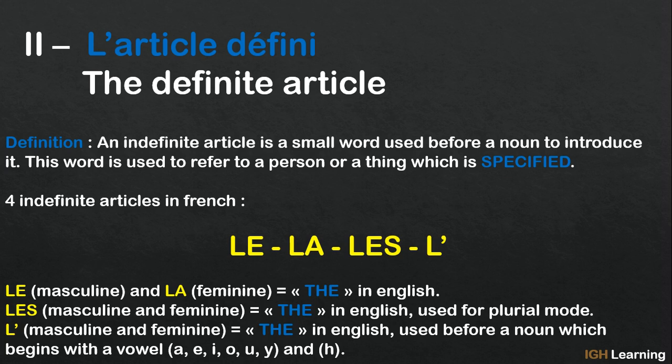Finally we have l'apostrophe. We use this for both masculine and feminine words, and its equivalent is also 'the'. Please use this word before a noun which begins with a vowel — a, e, i, o, u, y — and also the letter h. So if you have a word which begins with these letters, you have to use l'apostrophe.